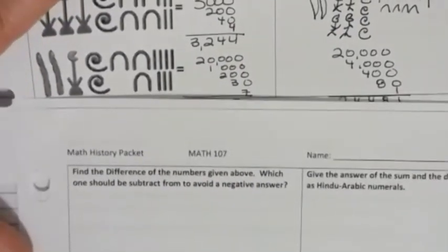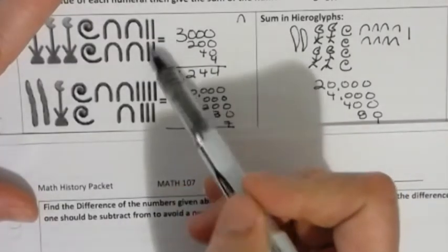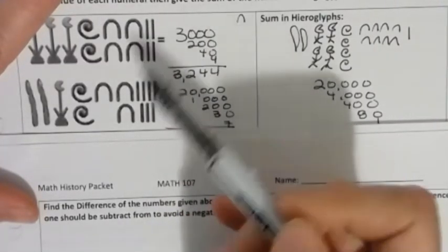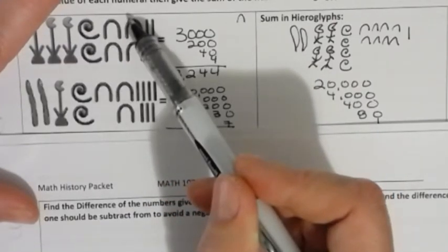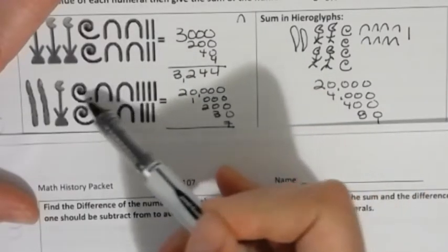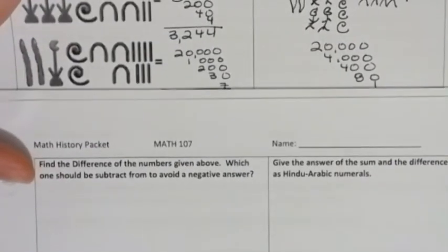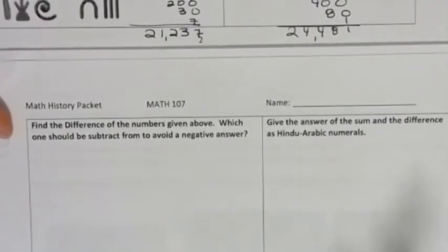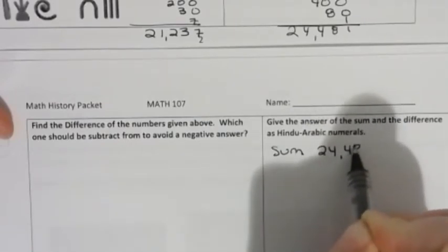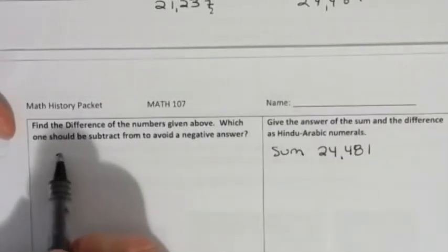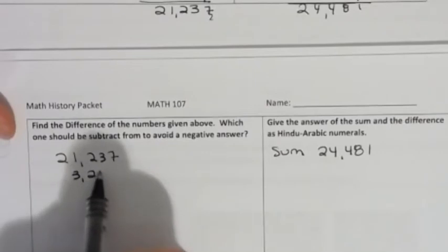So I'm not going to do the subtraction out long-wise, but you can get the idea that if you want to subtract three, four strokes from this, you would just cancel out four strokes. But if you wanted to subtract four heel bones, you'd have to borrow from a coiled rope and make 10 more heel bones and then subtract, right, from here. You'd borrow from here because you're subtracting from that greater number. But it says give the answer of the sum and the difference as Hindu Arabic numbers. And that sum I just did. So the sum in Hindu Arabic was 24,481.